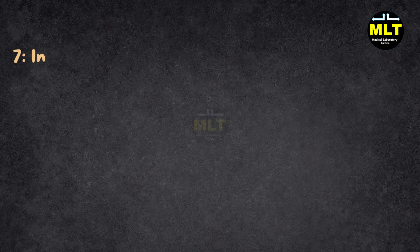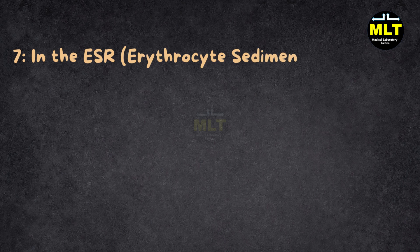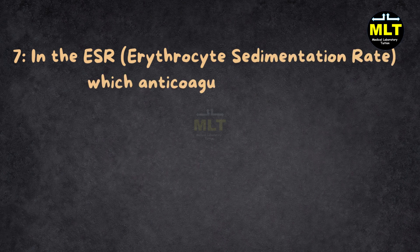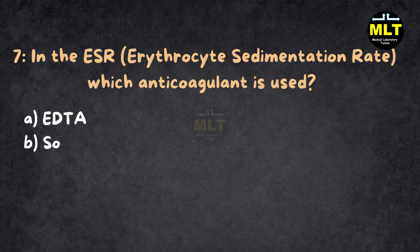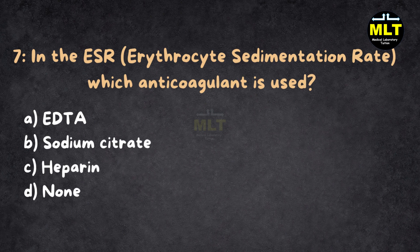MCQ 7. In the ESR (erythrocyte sedimentation rate) test, which anticoagulant is used? A. EDTA. B. Sodium citrate. C. Heparin. D. None of the above.